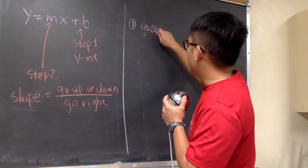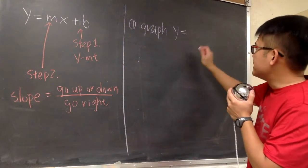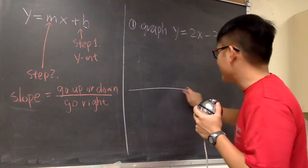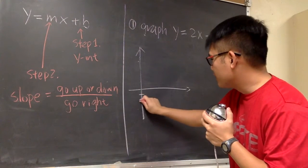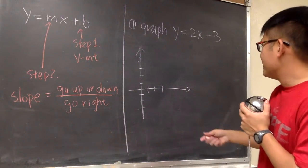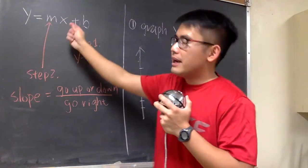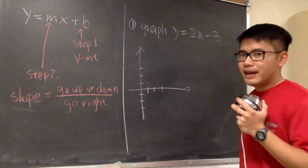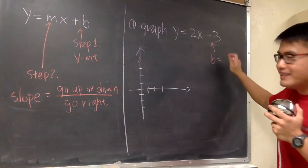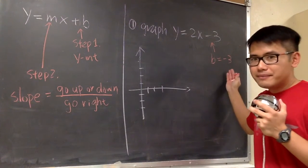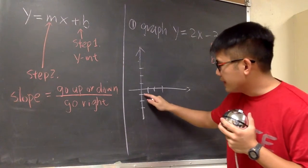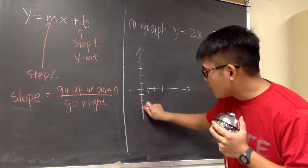For the first example, I'm going to show you how to graph y is equal to 2x minus 3. We need graph paper, so let's set that up. This equation is already in the mx plus b form and y is isolated. We look at the b value, which in this case is negative 3 — so we begin on the y-axis at negative 3. We go to negative 1, negative 2, negative 3, and put a point right there. That's the first point.